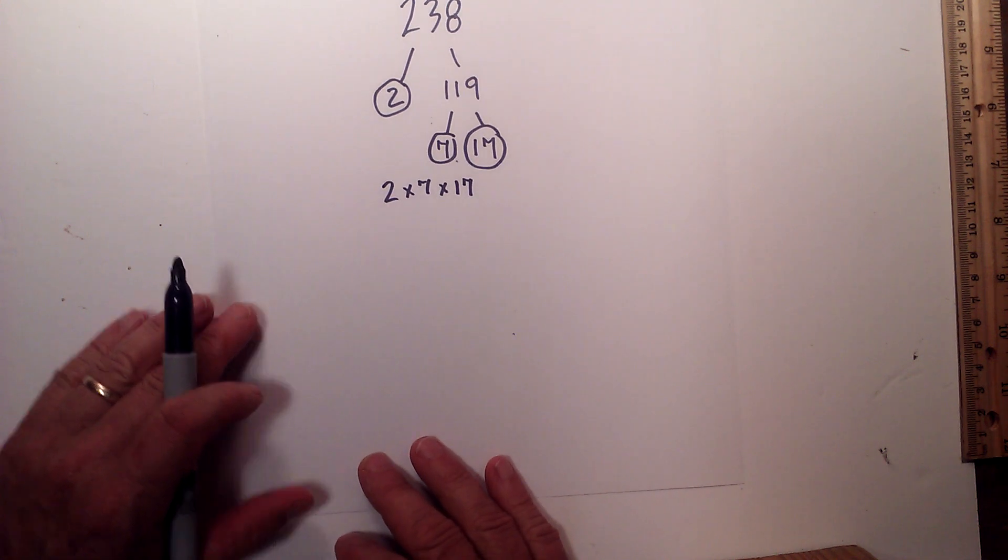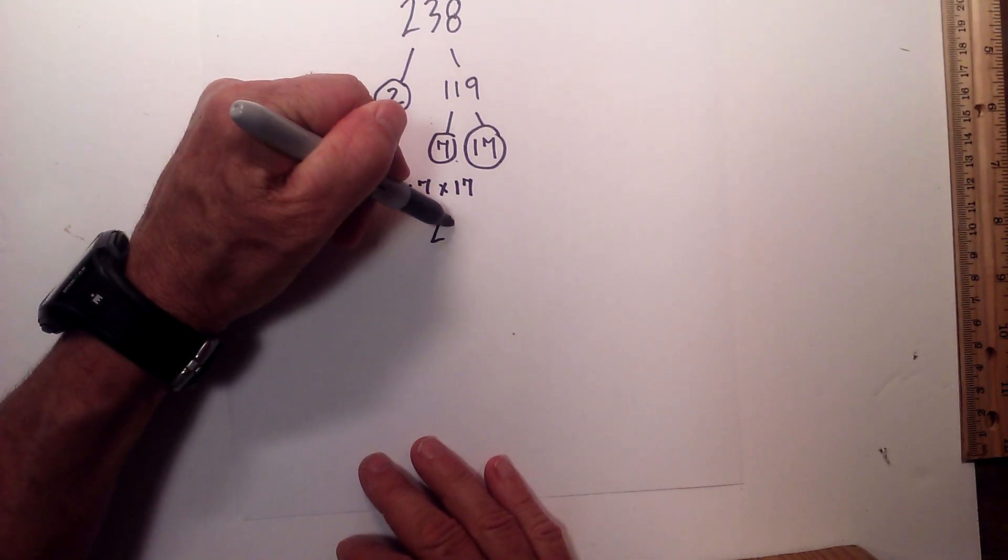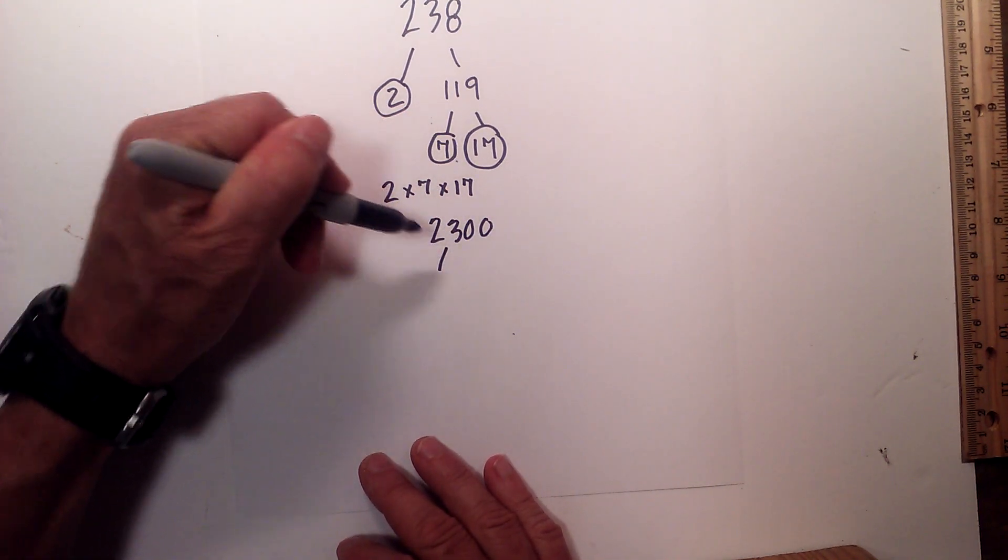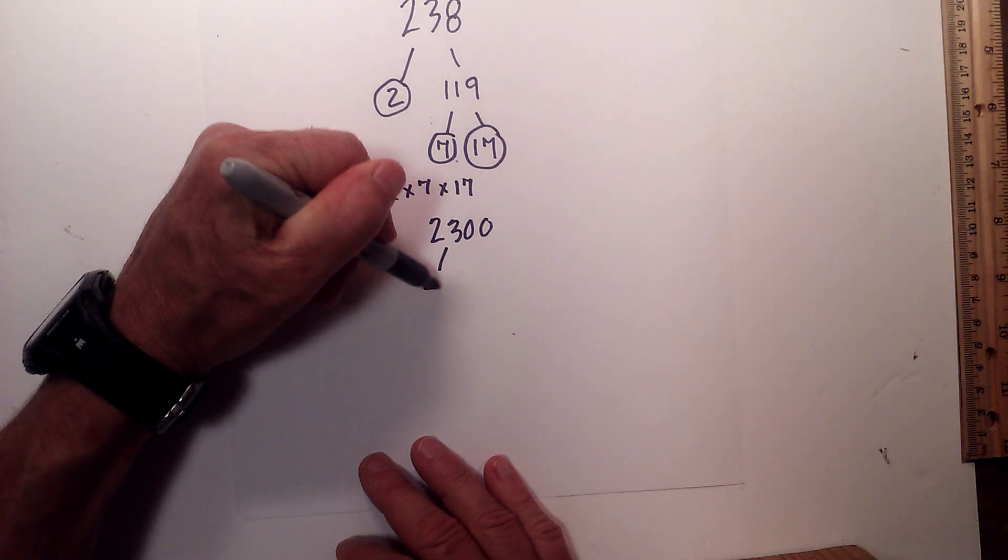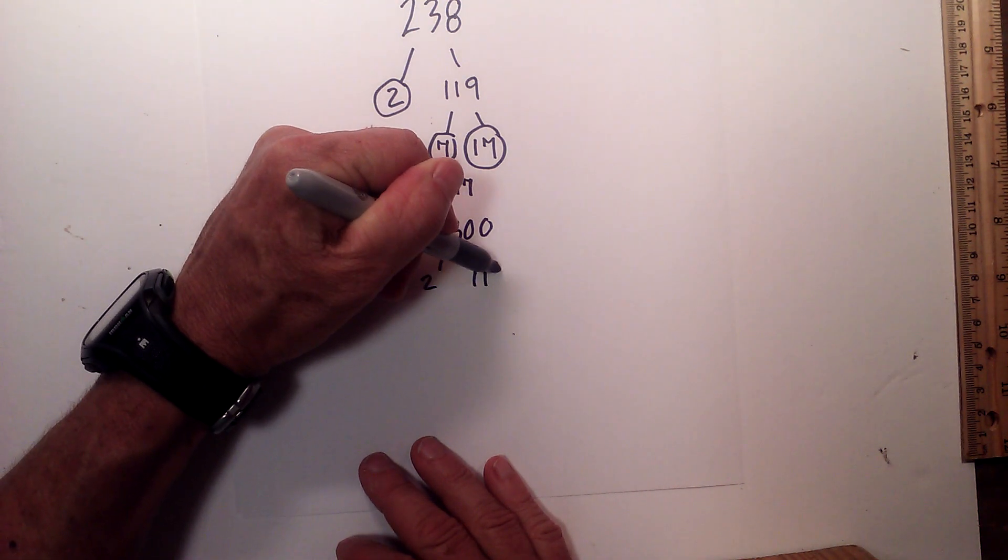Now let's try 2300. I will begin by multiplying 2 times 1150.